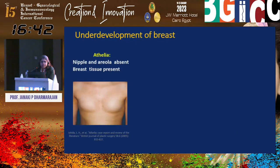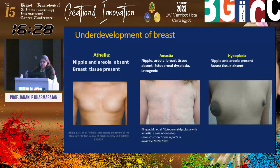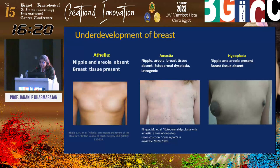Athelia means the nipple and areola are absent but breast tissue is present. In amasia, the nipple, areola, and breast tissue are all absent — it can be due to ectodermal dysplasia or iatrogenic causes. In hypoplasia, the nipple and areola are present but breast tissue is absent. These are conditions where the patient can be offered reconstructive surgery after attaining 18 years of age.